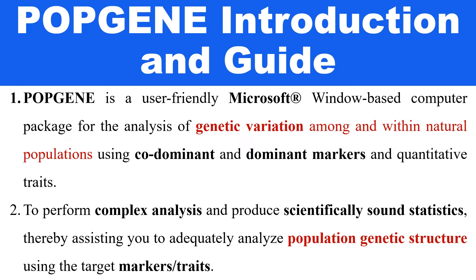Popgene is a user-friendly Microsoft Windows-based computer package for analysis of genetic variation among and within natural populations. This software is used to analyze co-dominant and dominant marker data and quantitative traits to perform complex analysis and produce scientifically sound statistics, thereby assisting you to adequately analyze population genetics structure using target marker trait data.